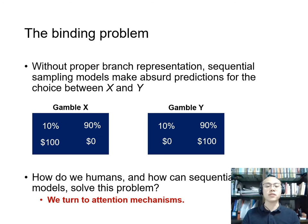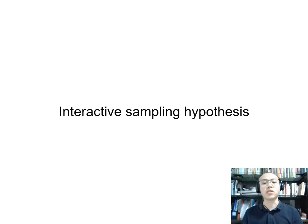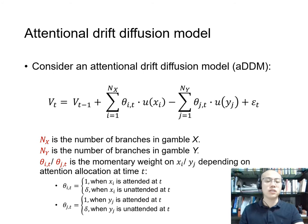By drawing from the broad cognitive science literature on binding, we turn to attention mechanisms. Specifically, we propose an interactive sampling mechanism to solve this problem. The key idea of interactive sampling is that information sampling is not sequentially independent. Rather, the likelihood of sampling a payoff depends on its associated probability. To show how interactive sampling works, let's consider an attentional drift diffusion model, or ADDM, as the preference accumulation framework.